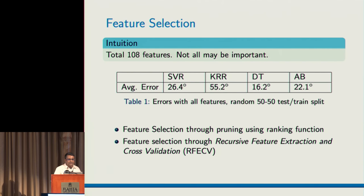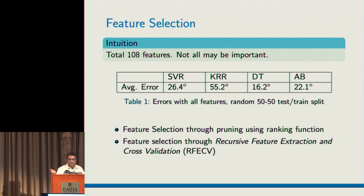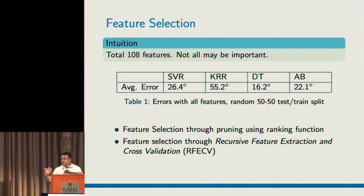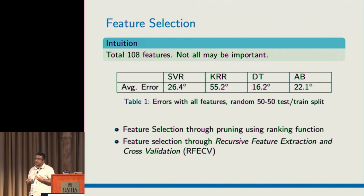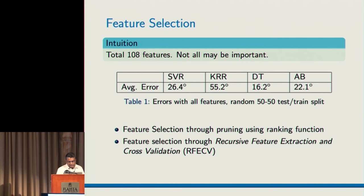When we used all 108 features with these different algorithms, the results were not very good — errors of 26, 55, 16, and 22 degrees. So we decided to do some feature selection, because it might be that all 108 features are not good and they are biasing the system. It's better to select a subset of features that actually capture and represent the problem well in the feature space, and then do the regression.